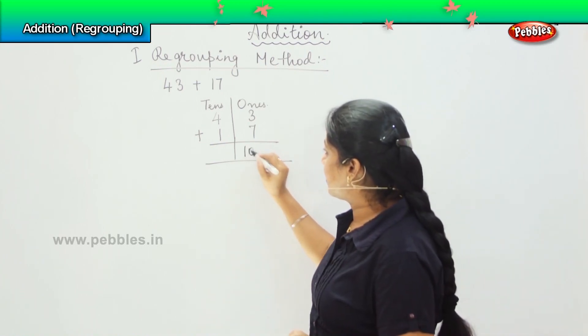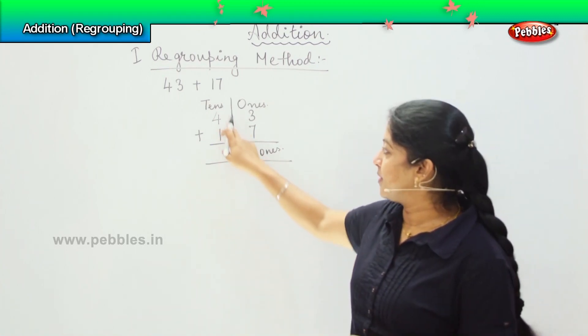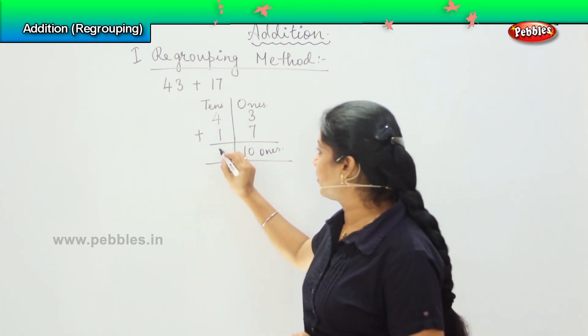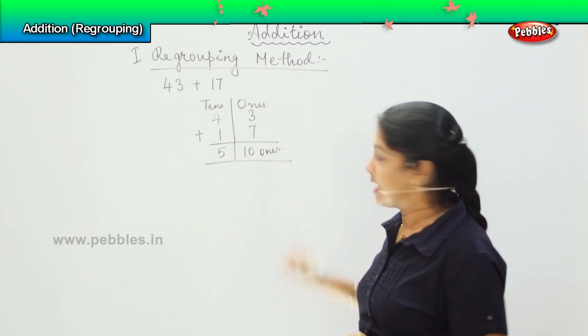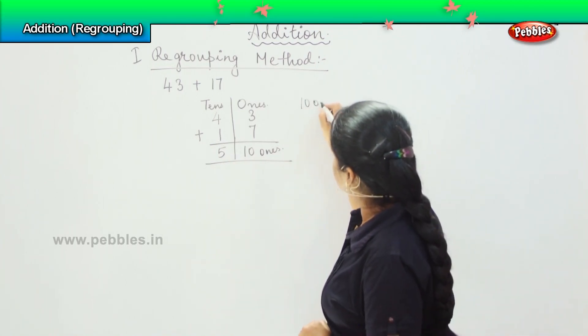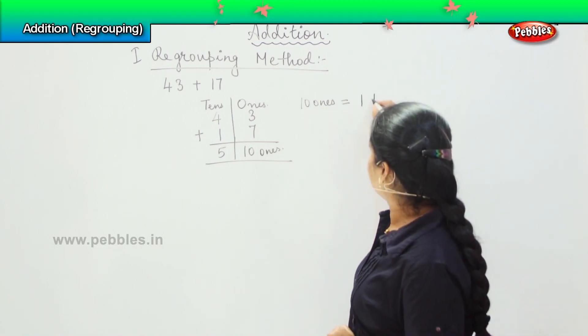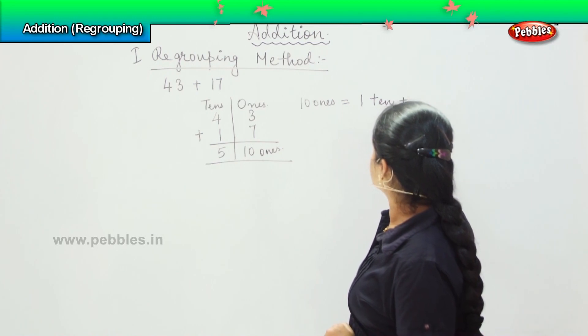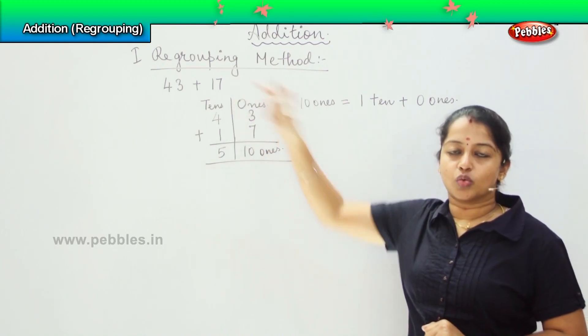So if I write here 10 ones and 4 plus 1 is 5, I have 5 tens and 10 ones. How can you write 10 ones? Can you write after 9? It has to go forward.